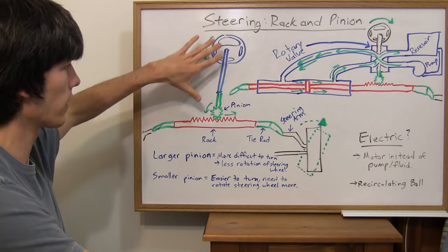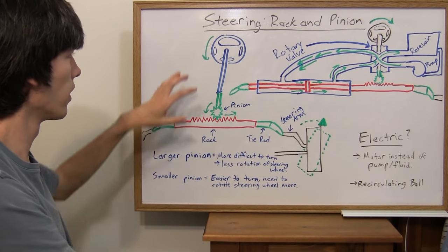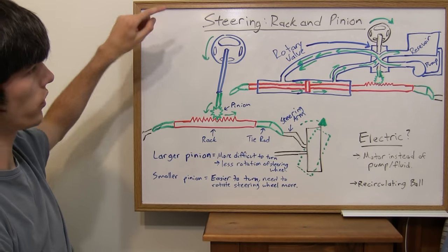So for the first part, just look at this picture here. Ignore all of that. That's the power steering and I'll go over that. So basically you've got your steering wheel here.